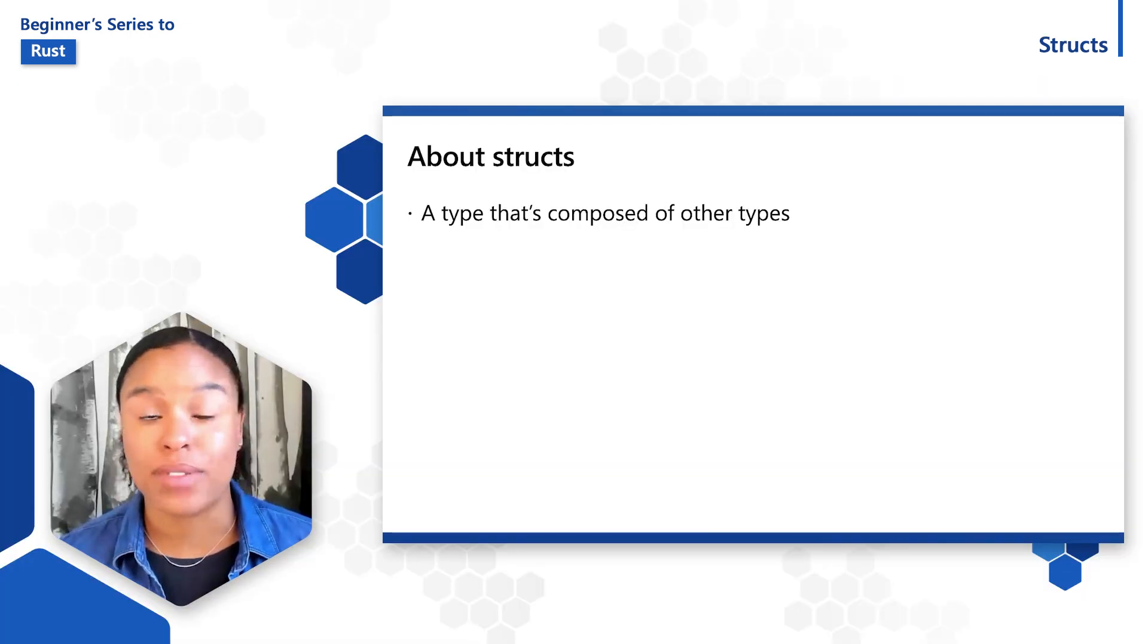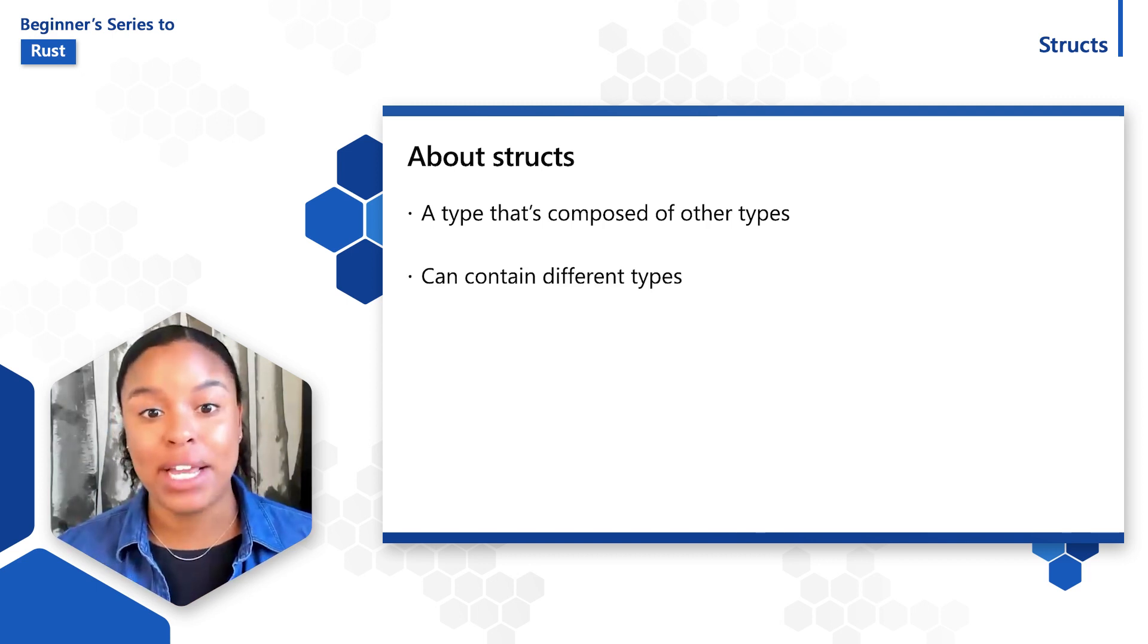A struct is a type that's composed of other types. Like tuples, the pieces of a struct can be different types, but you can name each piece of data so it's clear what the values mean. Because each field is named, structs are more flexible than tuples.